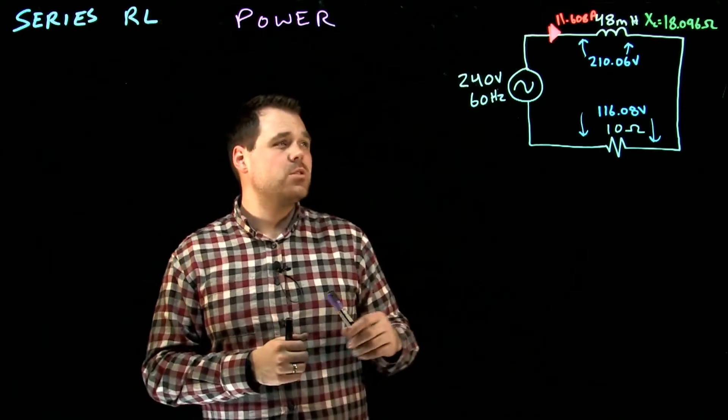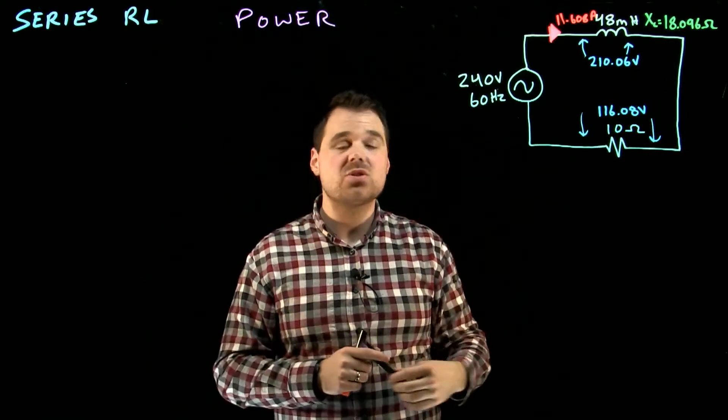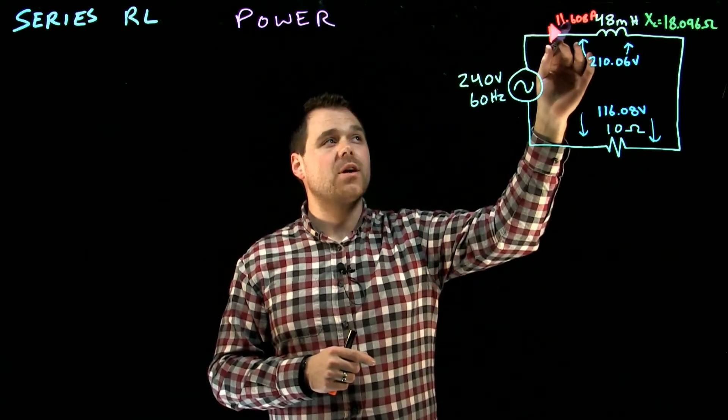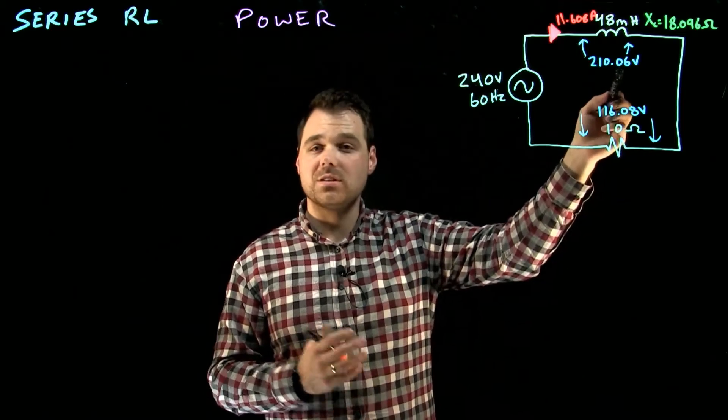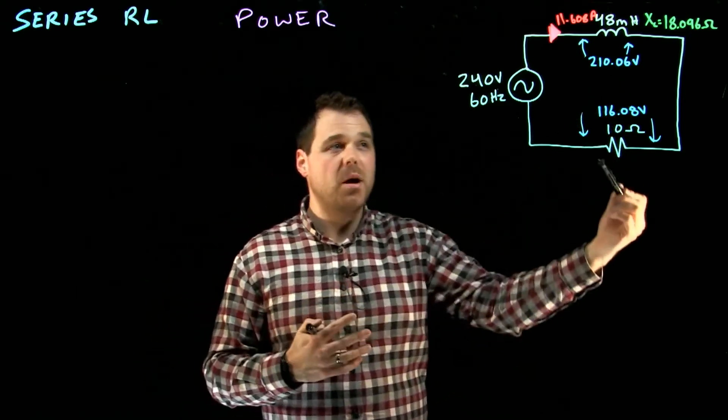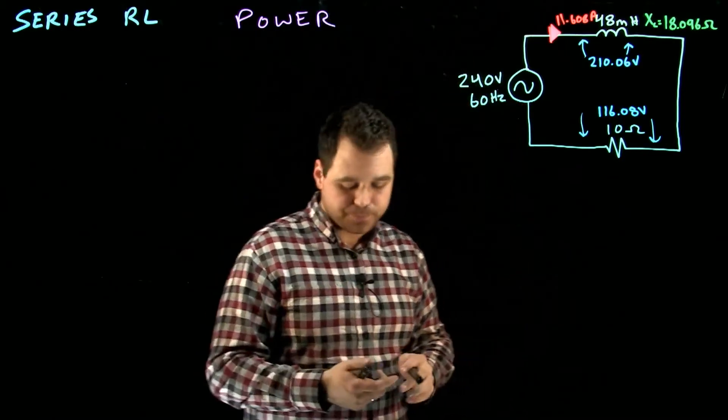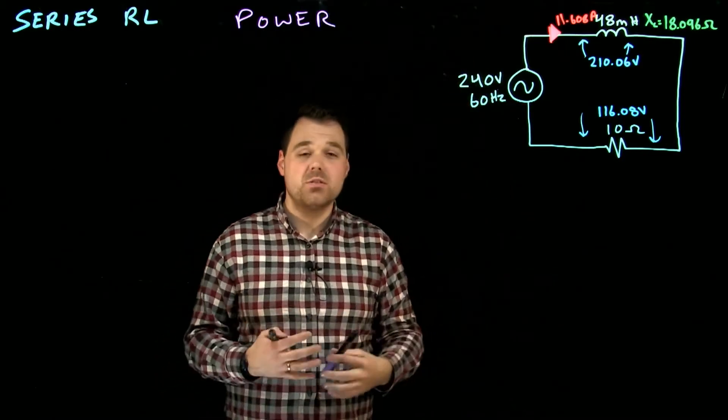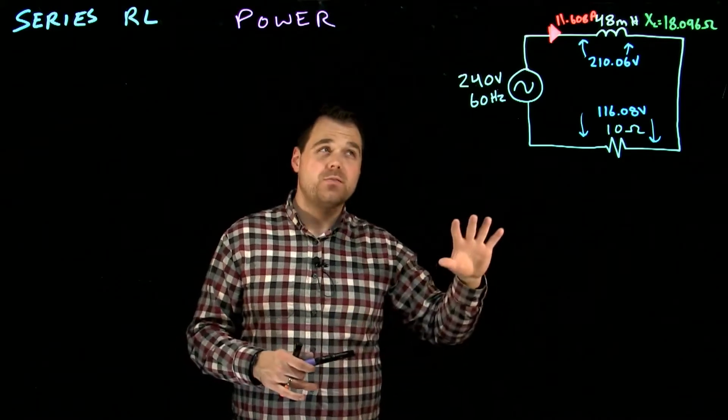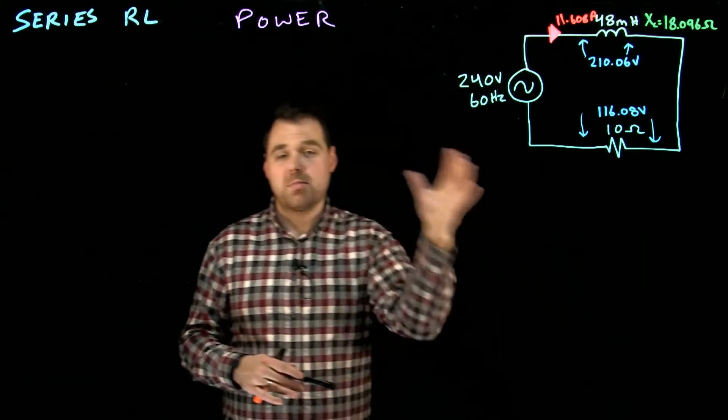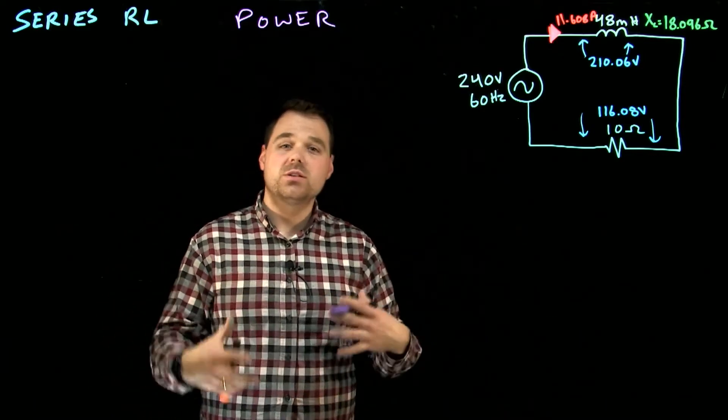So in the last two videos we solved for the inductive reactance and the impedance of the circuit, then we went to solve for our current. Once we had our current we took a look at our volt drops across the loads and we added them up using a phasor chart to ensure that they equaled our source voltage. What I want to talk about in this video though is our power relationships. Now we can often go right from current and impedance right into power and skip voltage altogether. Just depends on what we're looking to go for.